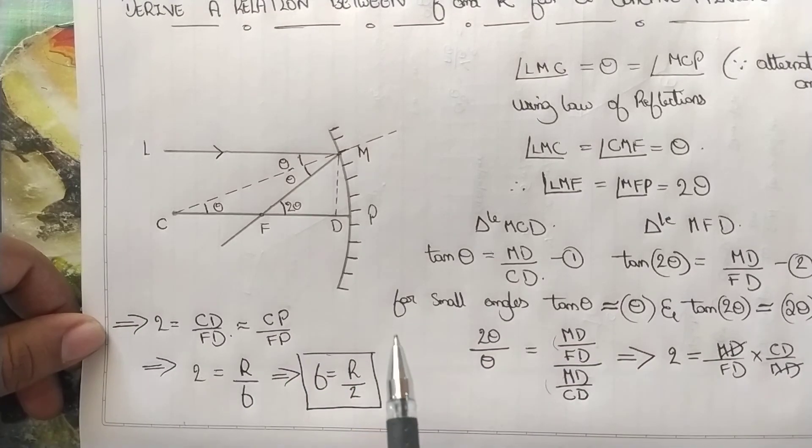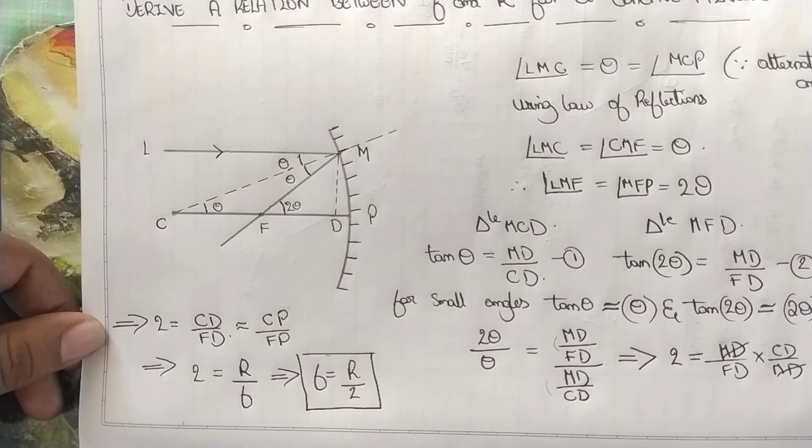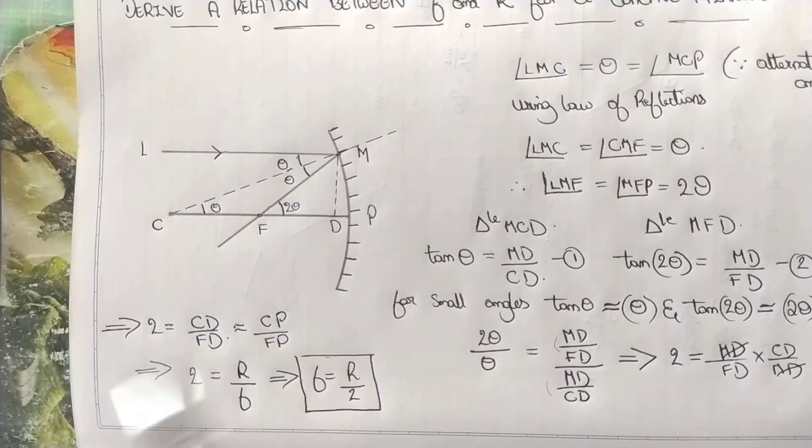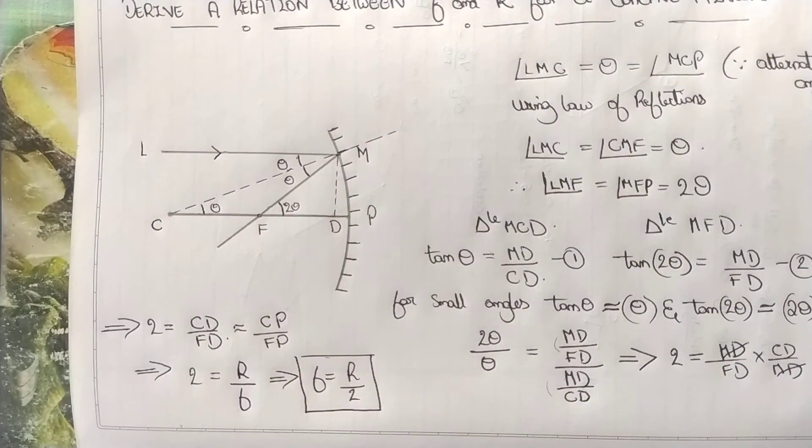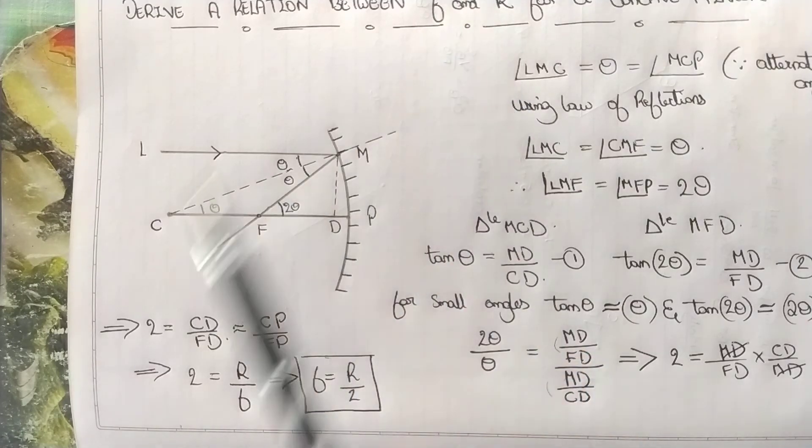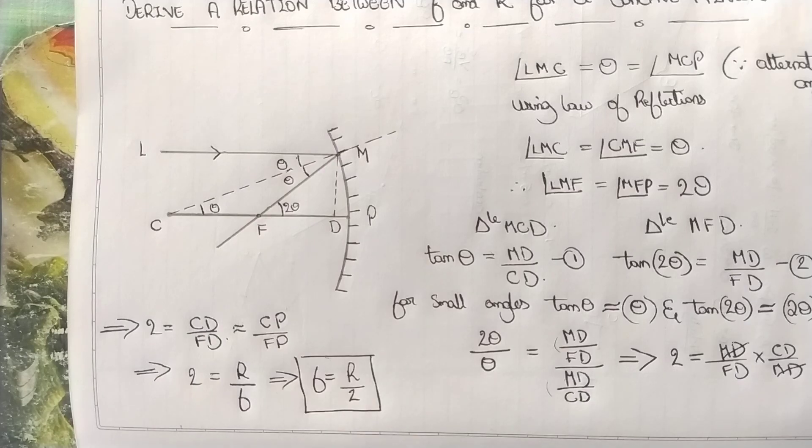You can watch all our videos in the class 12 physics playlist. From this derivation, we learned the relation f equals r by 2, which is the relation between focal length and radius of curvature. Thanks for watching. Please subscribe and share among your friends.